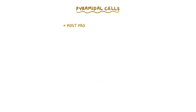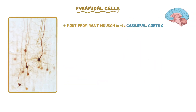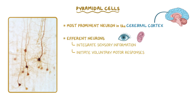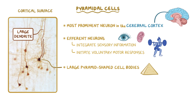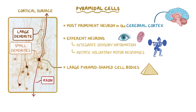The pyramidal cells are the most prominent neuron in the cerebral cortex. These efferent neurons integrate sensory information and initiate voluntary motor responses. They get their name from their large pyramid-shaped cell bodies that have an apex pointing towards the cortical surface. At the apex, there's a large branching dendrite that extends up toward the cortical surface. The sides of the cell have much smaller dendrites branching out to the sides, and its single axon extends from the base of the cell to synapse with other cells in the cortex or deeper into the white matter. Together, the direction of the axon and the large dendrite give pyramidal cells their appearance of being vertically arranged within the cerebral cortex.